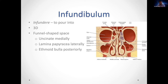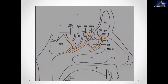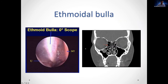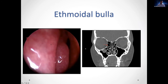This area, although we call the ostiomeatal complex a physiological region, does have anatomical representation. These structures — the uncinate, hiatus semilunaris, and infundibulum — are what we refer to anatomically as the ostiomeatal complex. The second constant landmark is the anterior face of the bulla. On cadaveric and endoscopic images you can see the uncinate process, ethmoid bulla, and hiatus semilunaris inferioris between them.